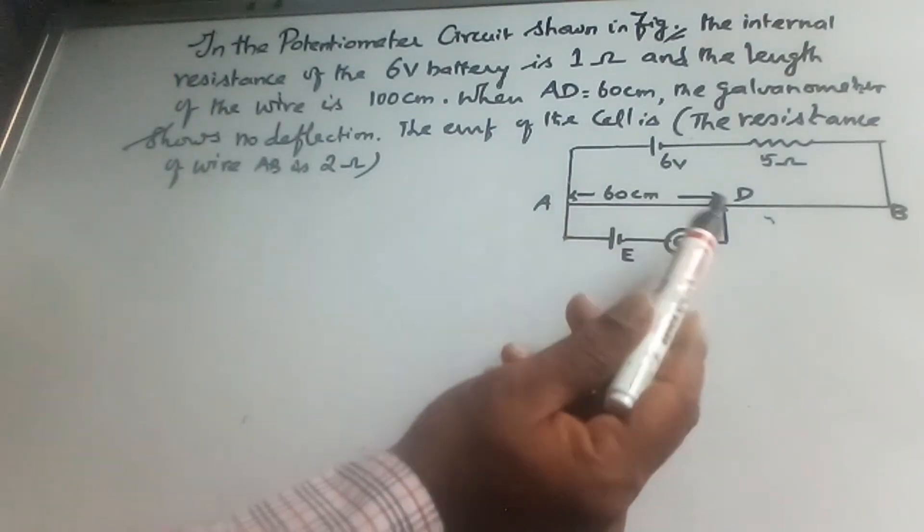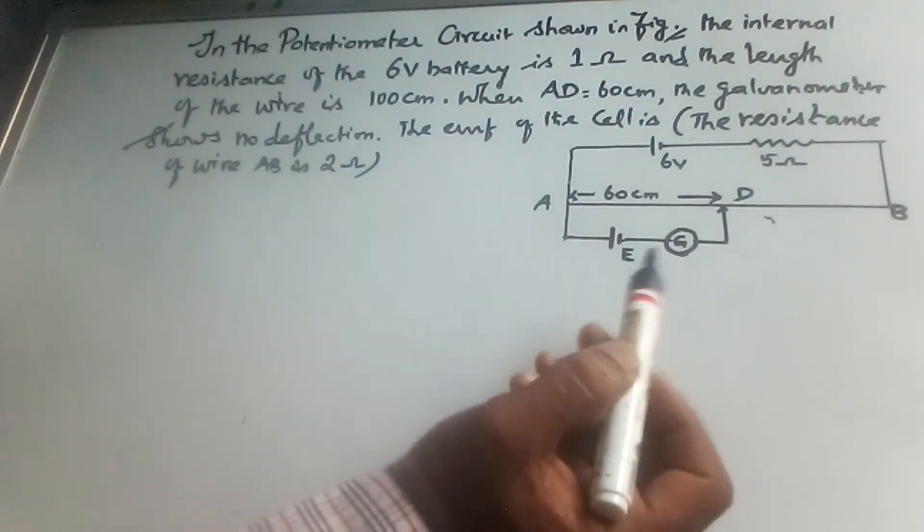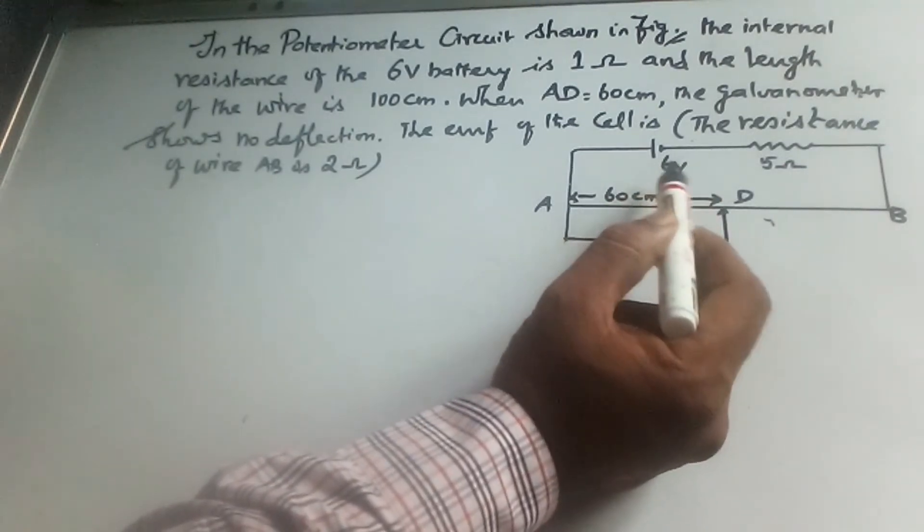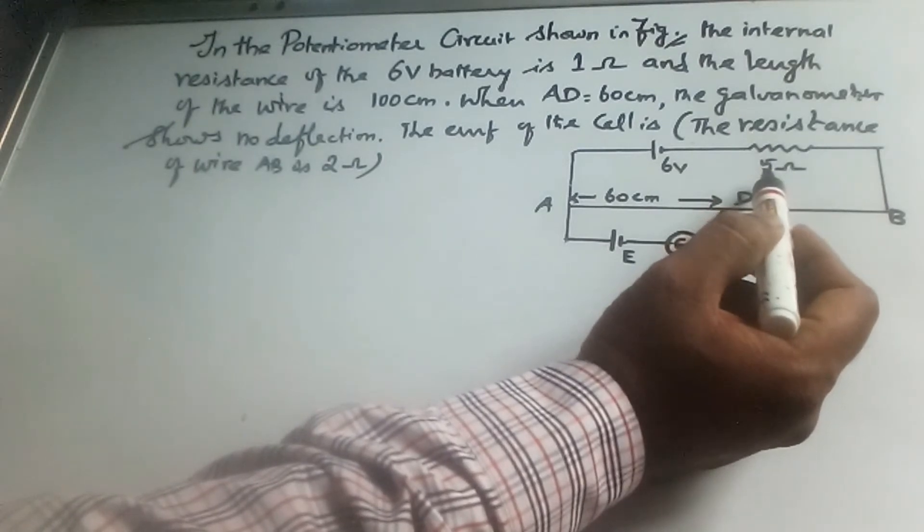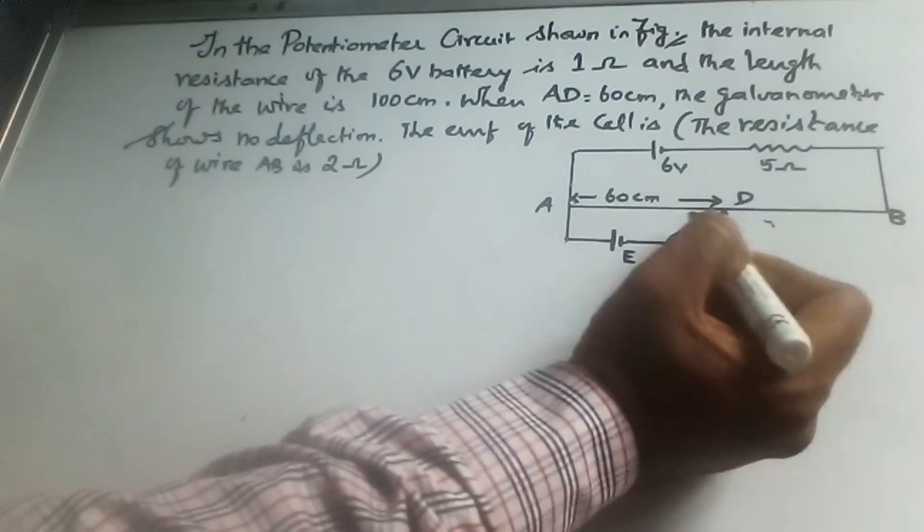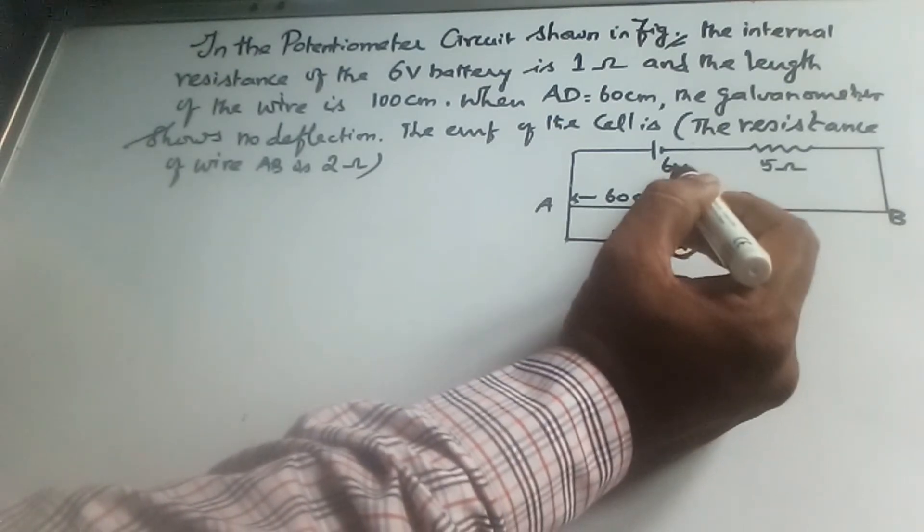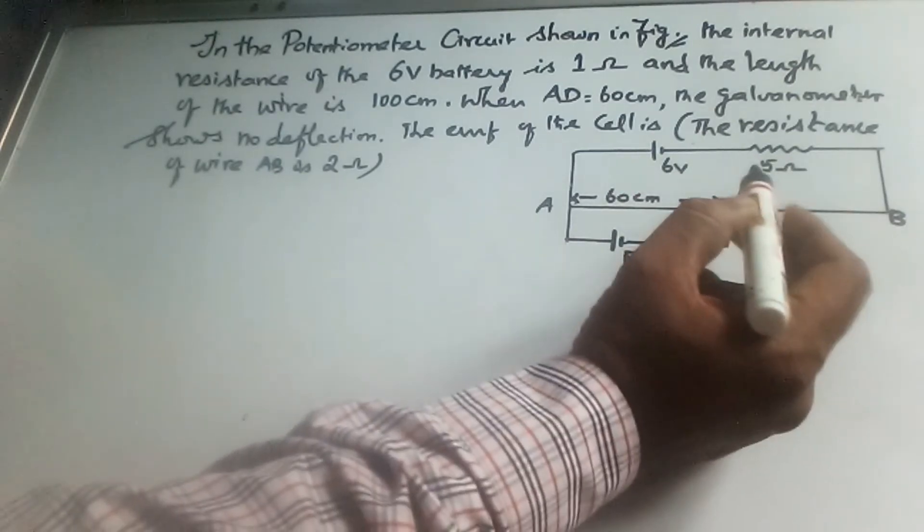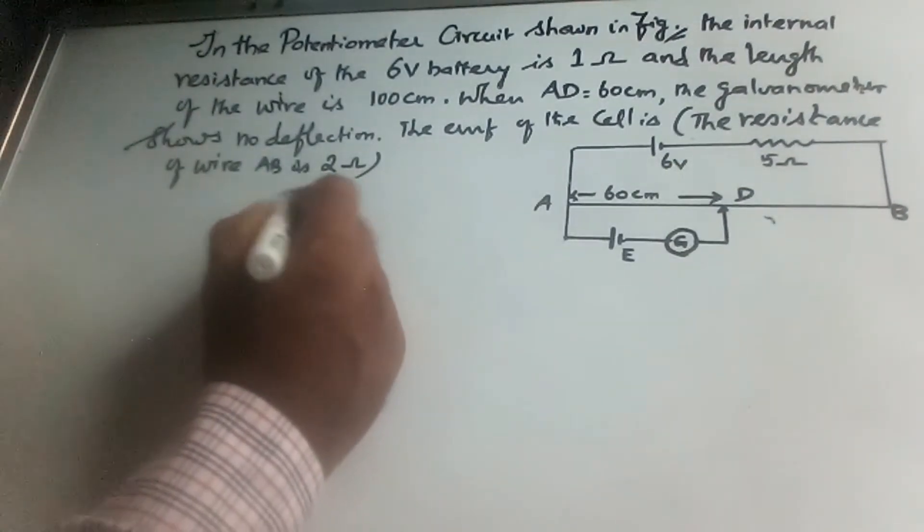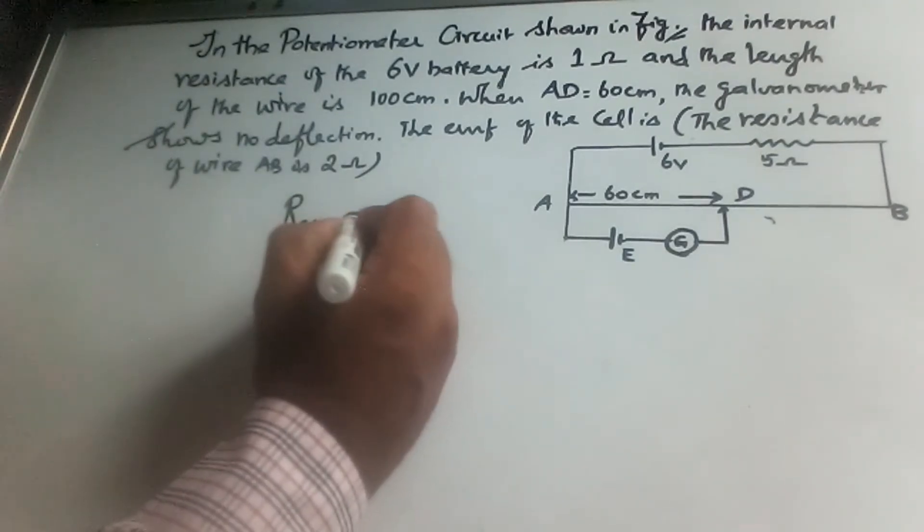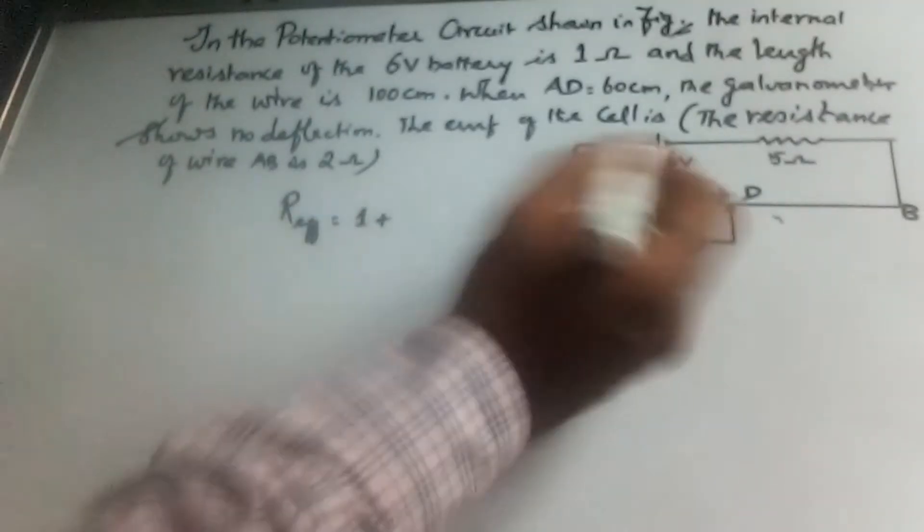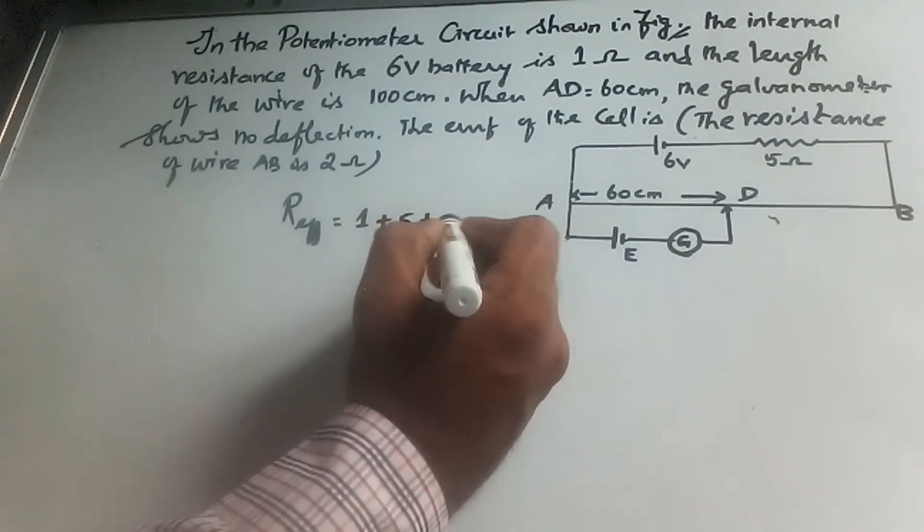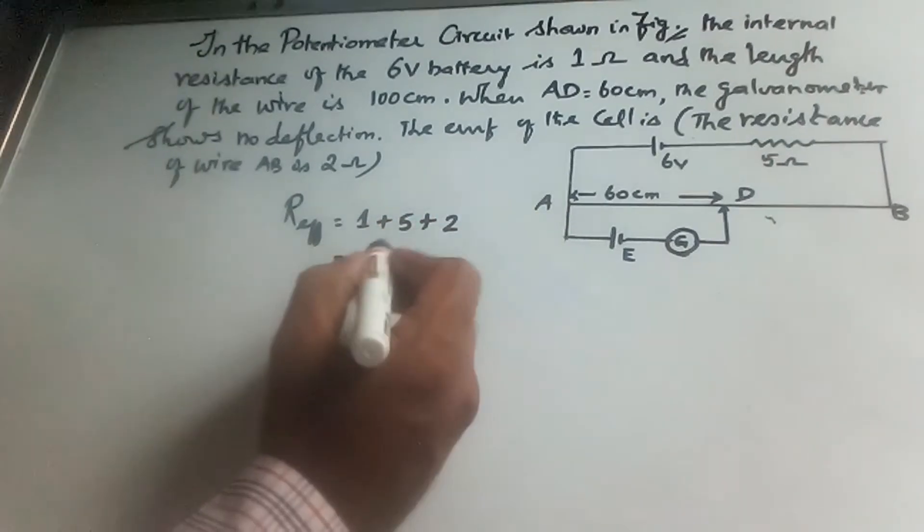The resistance of wire AB is given as 2 ohm. The circuit includes the internal resistance of the 6 volt battery which is 1 ohm, an additional 5 ohm resistor, and the AB wire with 2 ohm. The total resistance is 1 plus 5 plus 2, which equals 8 ohm.